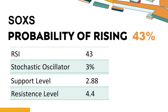Is SOXS showing signs of bullish momentum based on technical data? Technical Signals and Analysis: SOXS's 14-Day Relative Strength Index (RSI) value was 43. When the RSI is above 25 and below 50, it generally indicates that the stock is moderately bearish. This means that the security's price has been falling but has not yet reached oversold levels, typically considered an RSI reading of 25 or lower.